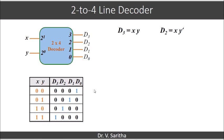D1 is 1 when x is 0 and y is 1, so we can represent d1 as x bar y. And similarly d naught is 1 when both x and y are 0, so we will represent d naught as x bar y bar.